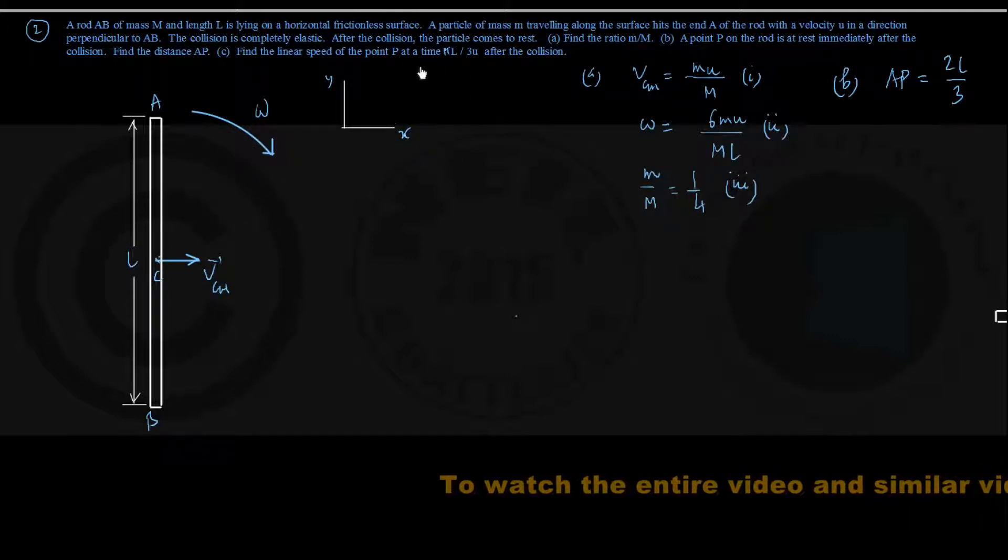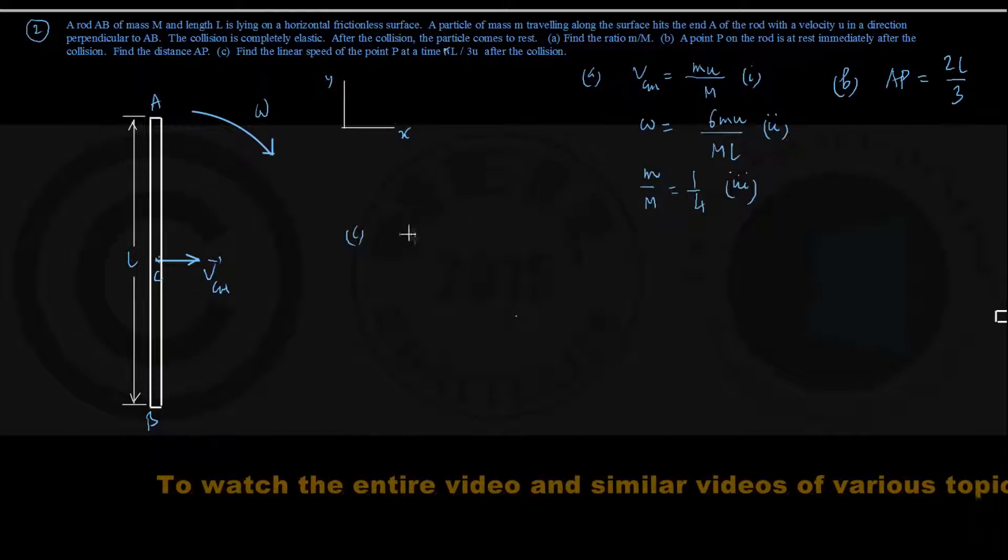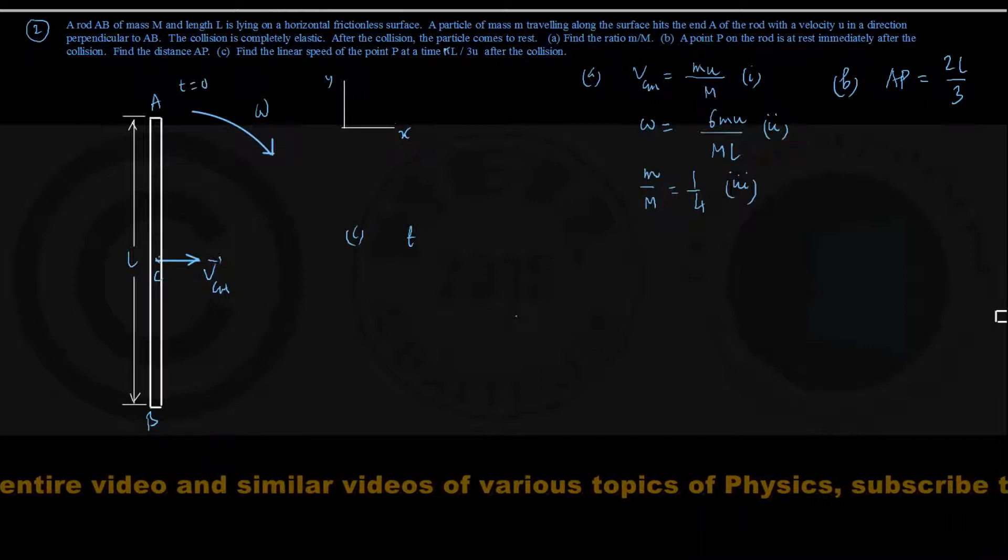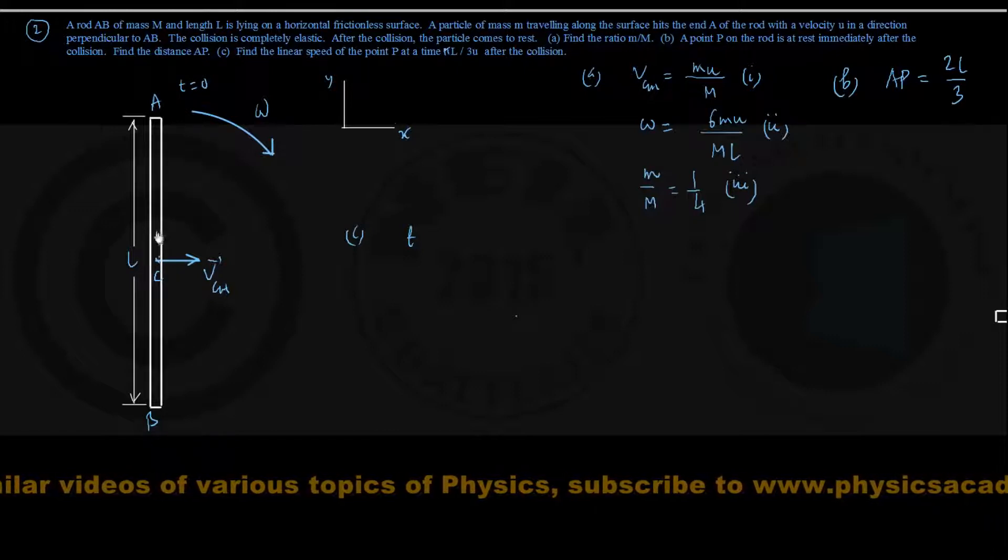As they have mentioned, this is part C. The time given, this was the condition at t equals 0 when this rod is in vertical position on my figure only, and that is t equals 0.